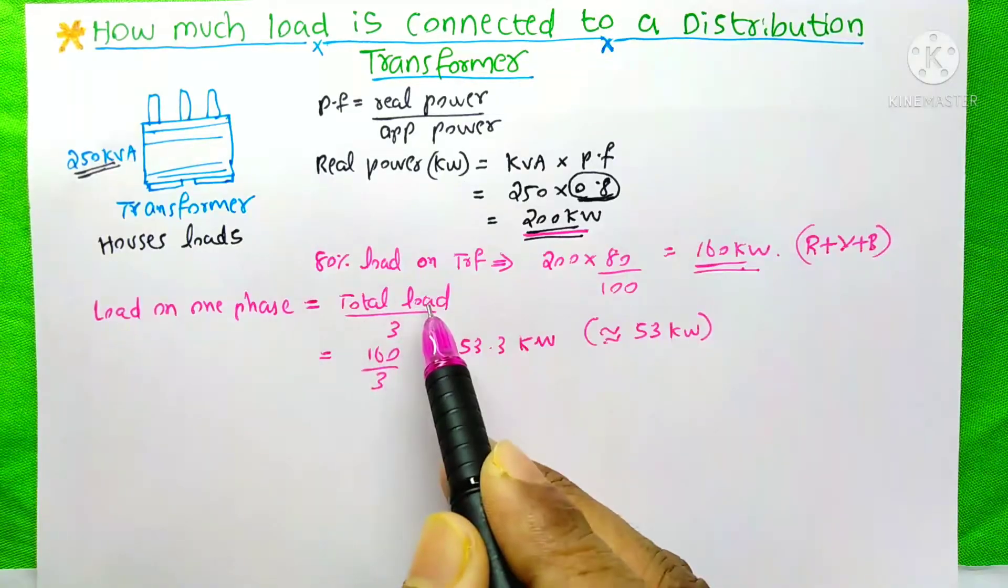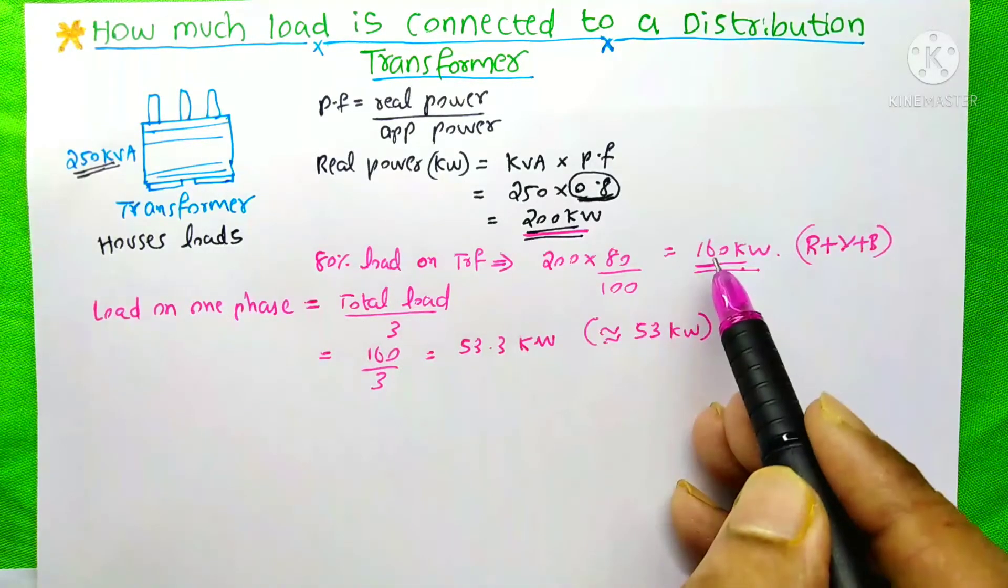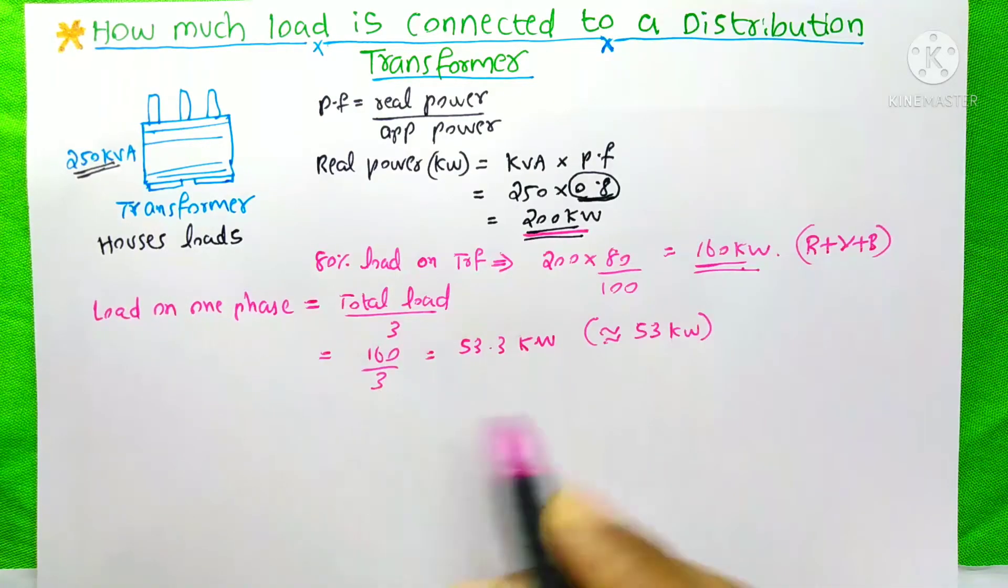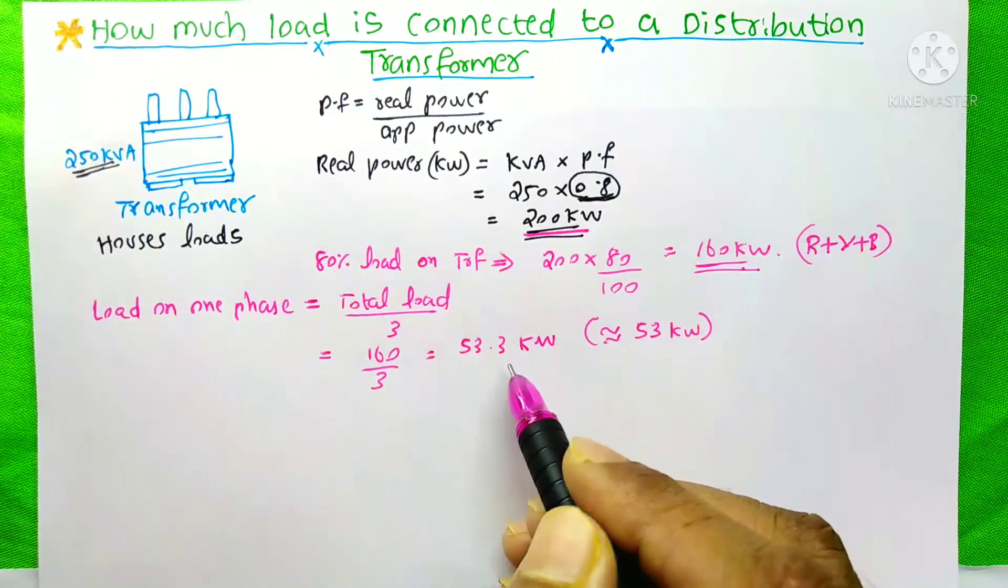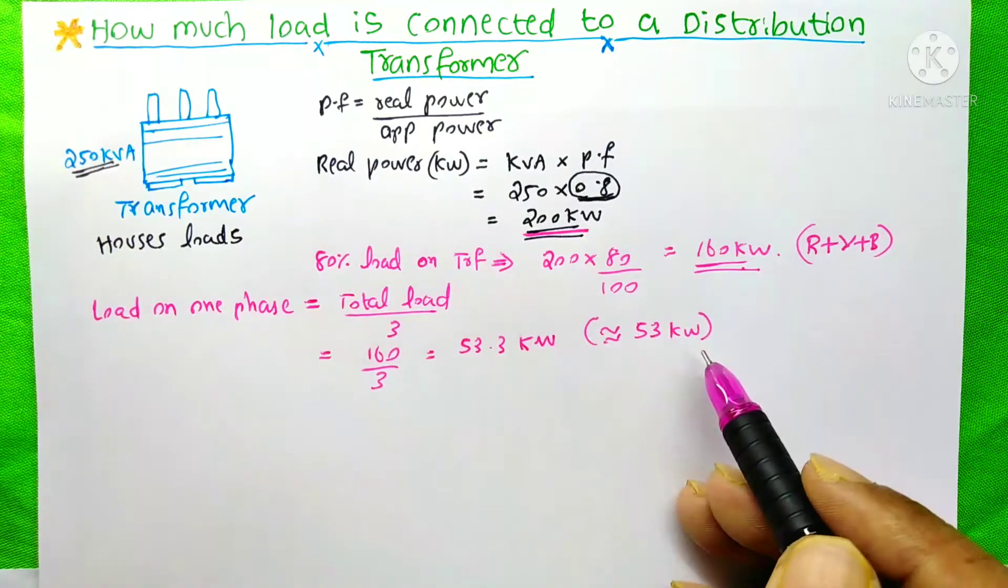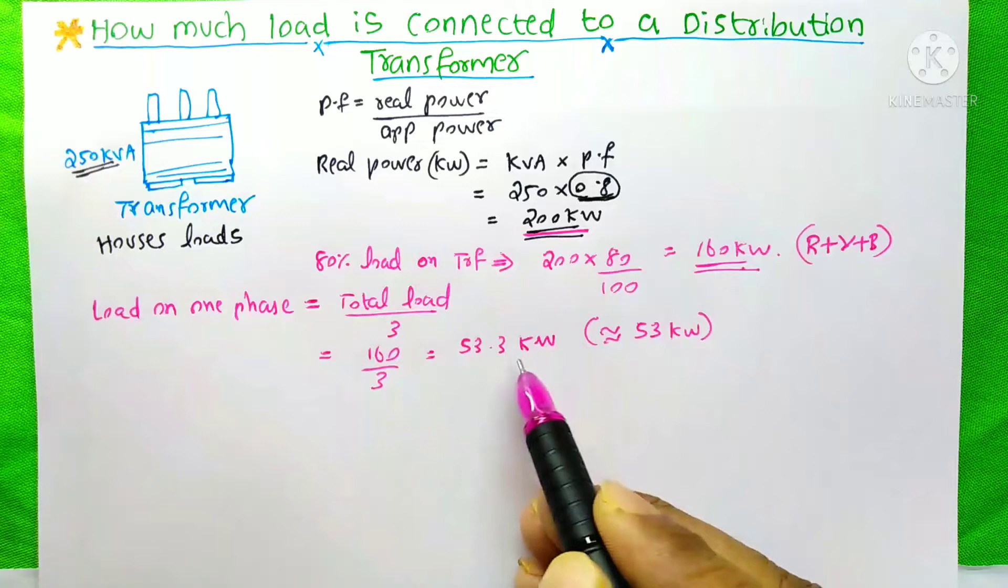The answer is total load divided by 3. That is 160 kW divided by 3, where 3 means the 3 phases. So it equals 53.3 kW, approximately 53 kW. Don't take 54 kW; we need to consider only less than this value.